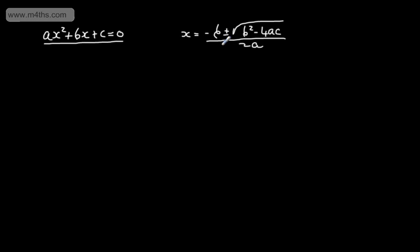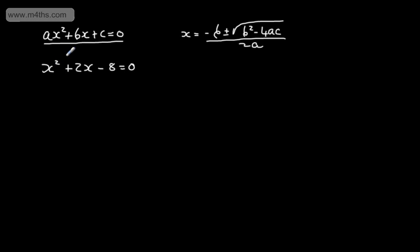The formula will be given to you in a formula book. Let's take a quadratic equation: x squared plus 2x minus 8 equals 0. This is in the form ax squared plus bx plus c equals 0, as we've seen in the previous videos.